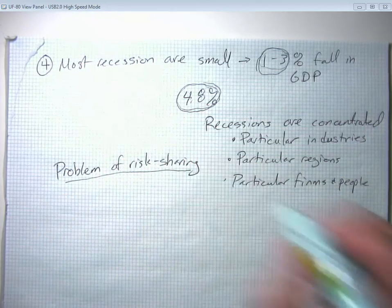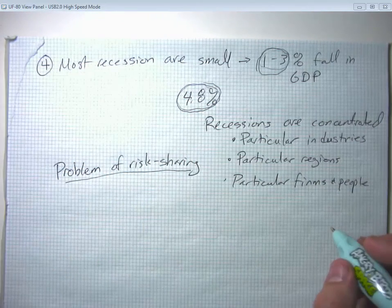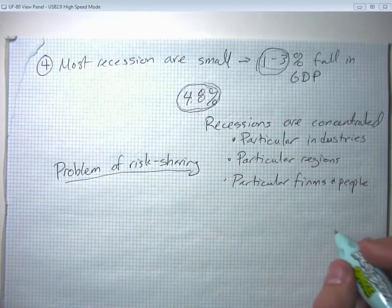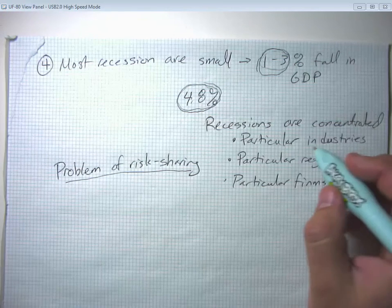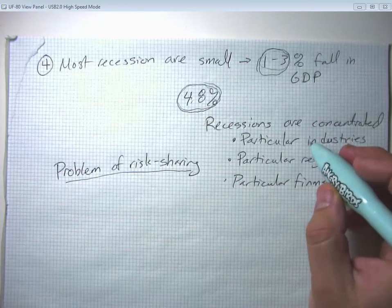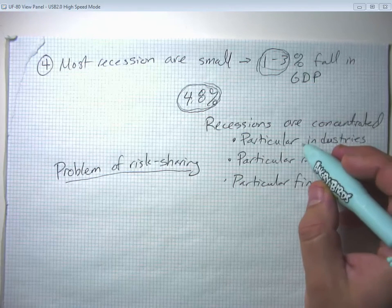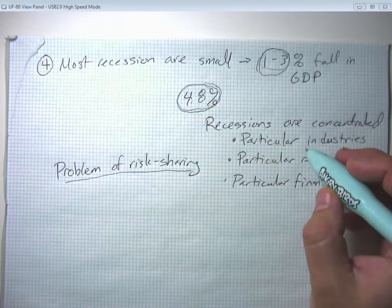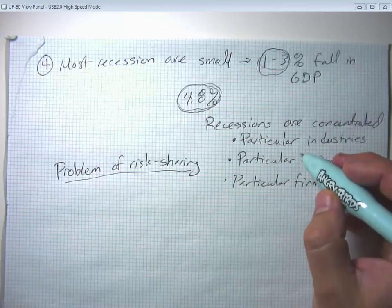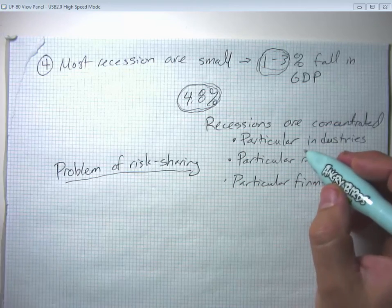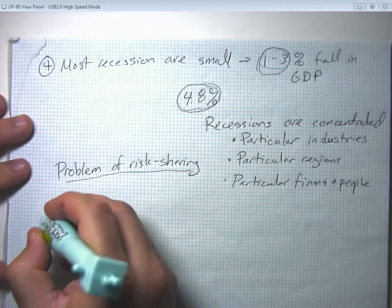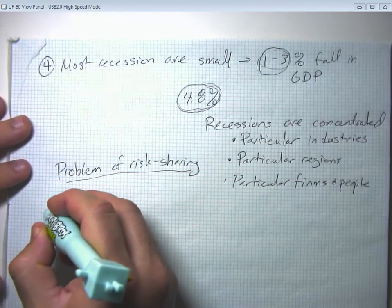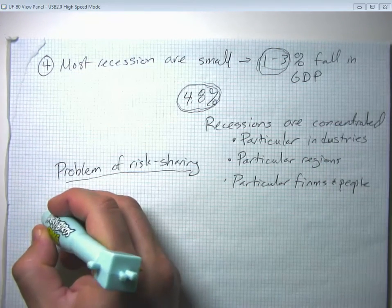How do we arrange risk sharing so that concentrated harm doesn't leave some people untouched while others get totally walloped? This is the argument for something like unemployment insurance — making it so that even if you get hit hard, we put a floor under your level of income and consumption.